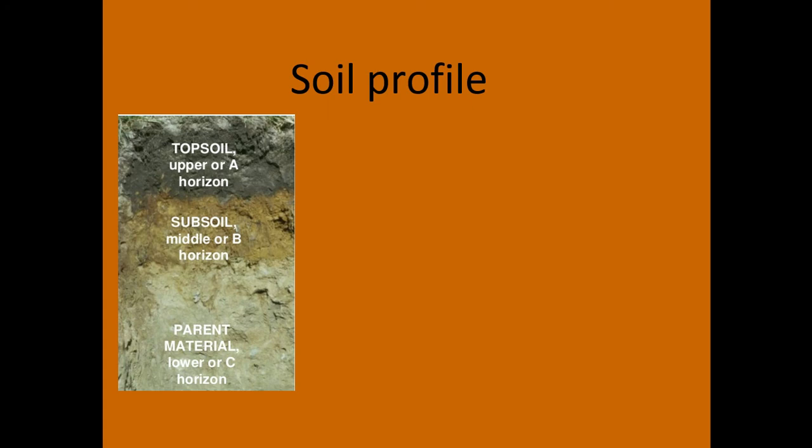An A horizon is our topsoil. A B horizon would be our subsoil. Often, if there's an E horizon present, it's between the A and the B. The B is where we have something depositing — leaching out of the E horizon and depositing in the B horizon. A C horizon is our parent material that hasn't been weathered into soil.